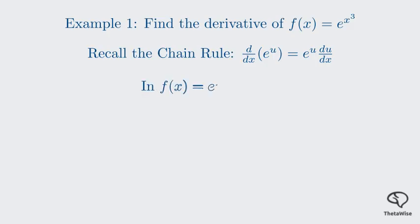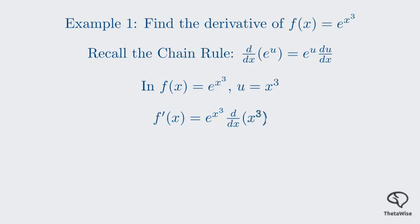We just need to identify what u is. In this case, u is the exponent, which is x cubed. Now we just apply the rule. The derivative is e^(x³) times the derivative of x³. So f′(x) = e^(x³) times 3x². So we get our final answer: the derivative is 3x² times e^(x³). By seeing the pattern and applying the chain rule, we solved it quickly.